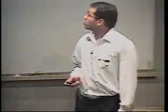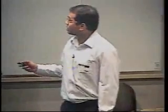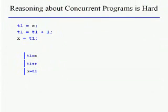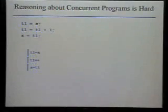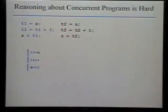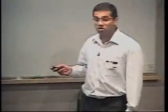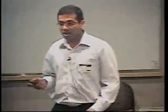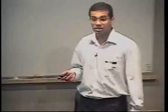It's well known that reasoning about concurrent programs is hard. Consider this sequential program, which increments a variable X using a temporary T1. This program has a single execution. Now let's add a little concurrency — just make another thread. Now there are two threads, both of which increment variable X: the first uses thread-local temporary T1, the second uses T2, while X is a thread-shared variable. I'm focusing on a shared memory concurrency model here.